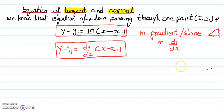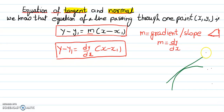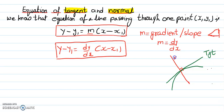Let me give you a brief idea of what is tangent and what is normal. If this is a curve and this is a line which is passing and touching the curve here, that is called tangent. Normal is always perpendicular to this tangent line — it always makes 90 degrees, and this is called normal.